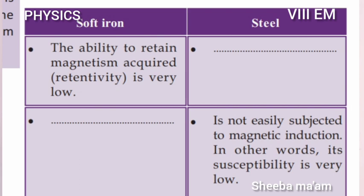Soft iron is easily subjected to magnetic induction — in other words, its susceptibility is very high. Steel is not easily subjected to magnetic induction — in other words, its susceptibility is very low.